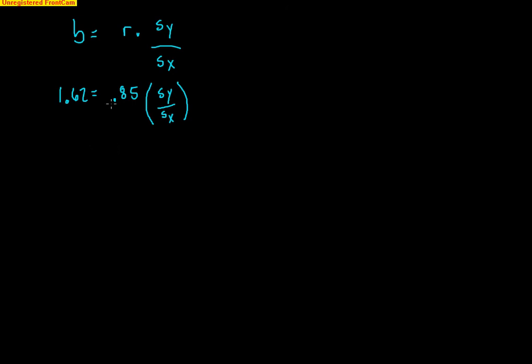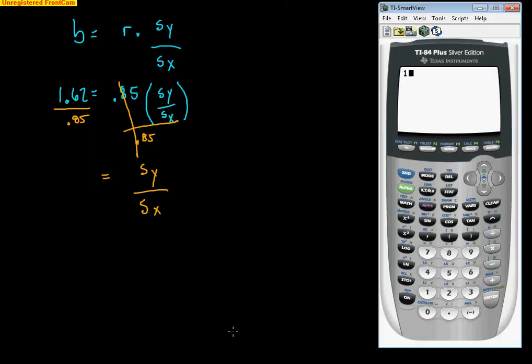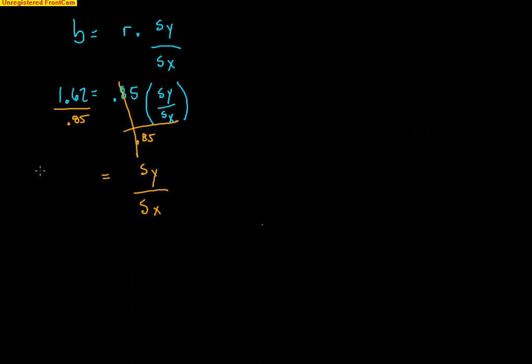But we do know what s of y divided by s of x would be. So if I divide both sides by 0.85, cross those out, I get that this relationship between the standard deviation of y and the standard deviation of x is going to be, let's bring up the calculator here, 1.62 divided by 0.85, I get 1.9059.